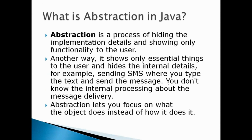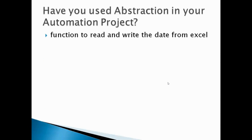What is abstraction? Abstraction is the process of hiding implementation details and showing only functionality to the user. For example, when you send an SMS to a friend, you focus on how you write the SMS and how it will be received — you are not interested in the internal working of the SMS system. This is what abstraction means.